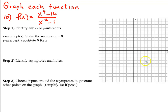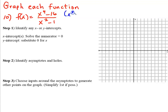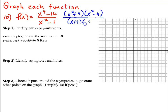I'm going to work through the problems assigned for tonight's assignment. This is number 10. In the first step, we want to identify x or y intercepts if they exist, and it's important to do any factoring we can. The numerator is the difference of two perfect squares: (x² + 4)(x² - 4), and the denominator is also the difference of two squares: (x + 1)(x - 1).